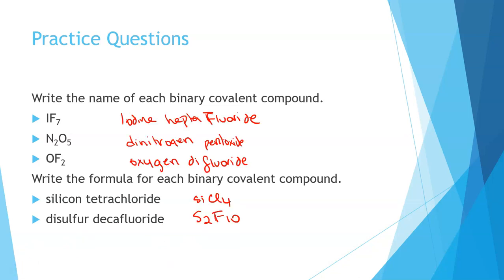Hopefully you were able to name these. So in our first one, we have one iodine. Remember, we don't use mono if it's the first element. So it's iodine heptafluoride because we have seven and that's hept. Then we have di-nitrogen pentoxide. So we have two nitrogens and five oxygens. We have OF2, which is a single oxygen, so no mono oxygen, difluoride because we have two here, so oxygen difluoride.